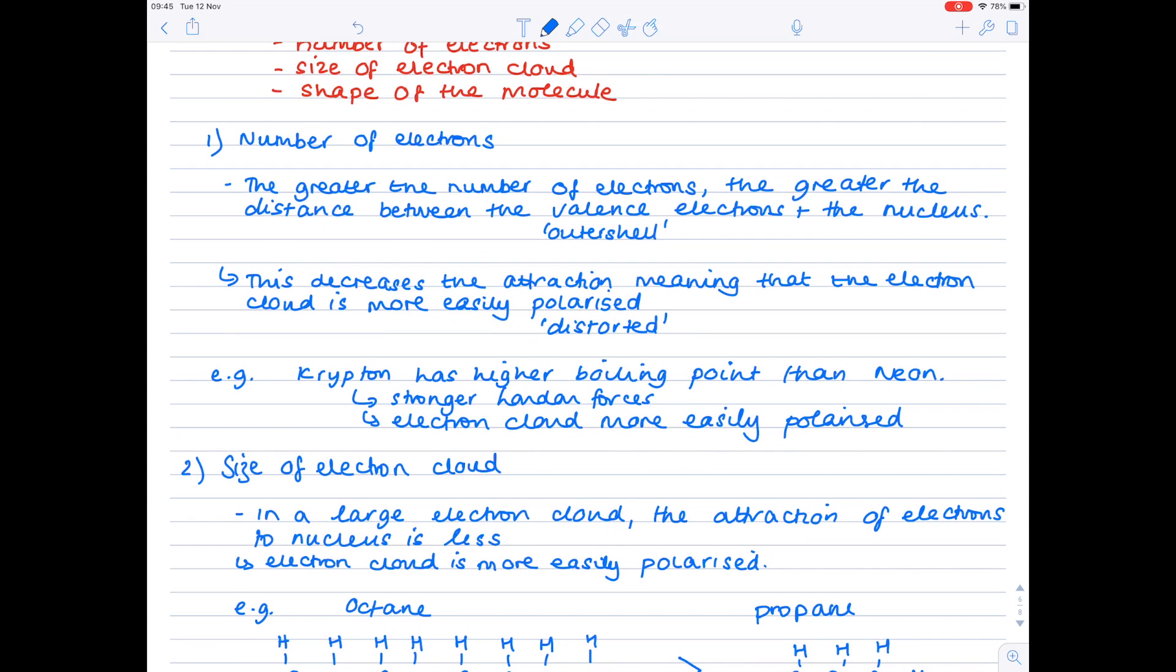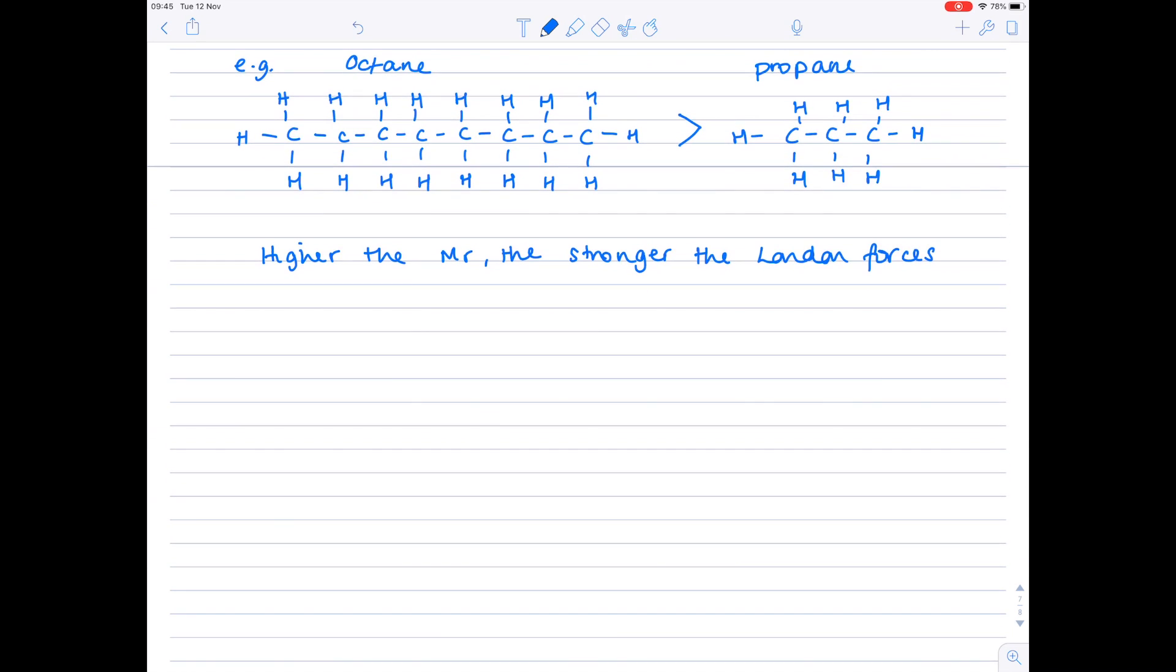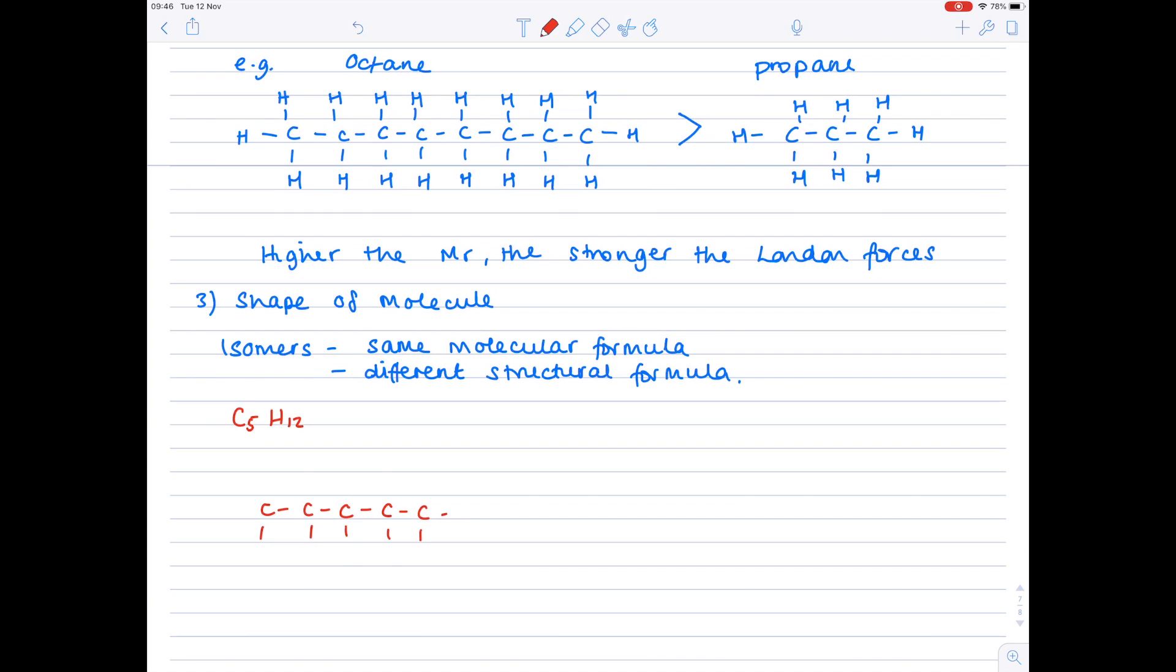Lastly, if we look back up, we can see that the shape of the molecule will affect the strength of the London forces. Let's take two isomers in order to explain this. Remember that isomers have the same molecular formula, but different structural formula. And so, if I use C5H12 as my example, let's draw its straight chain isomer first of all. So, that's just pentane.